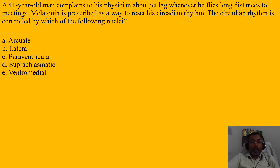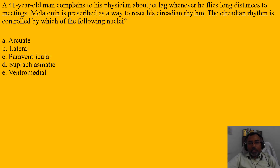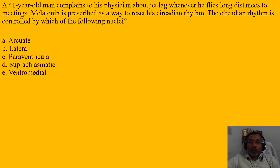A 41-year-old man complains to his physician about jet lag whenever he flies long distances to meetings. Melatonin is prescribed as a way to address his symptoms. At that time, we suffer from common symptoms related to the circadian rhythm. The question is: circadian rhythm is controlled by which of the following nuclei?